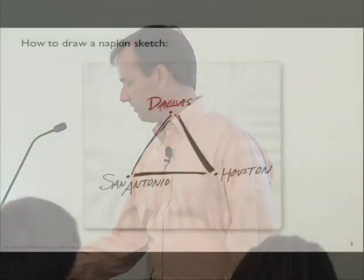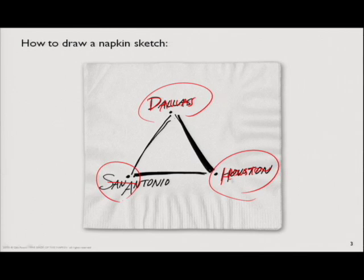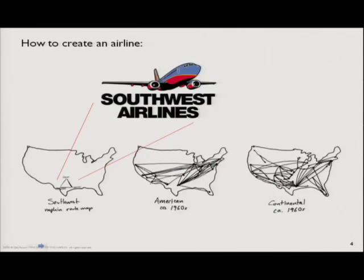As they're sitting at the bar — the St. Anthony's Club in downtown San Antonio — Rollin pulls out a napkin and says, 'Herb, you're going to think I'm crazy because we just shut down an airline, but I have an idea for another airline. If you think about Texas, it's a big state. We've got three main business areas: Dallas, Houston, and San Antonio. Imagine if we made an airline that just connected those three cities.' Herb said, 'Sounds like a great idea. Why don't we go ahead and do it?' Literally off the back of the napkin was started Southwest Airlines.